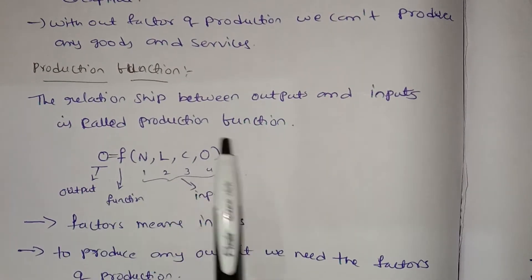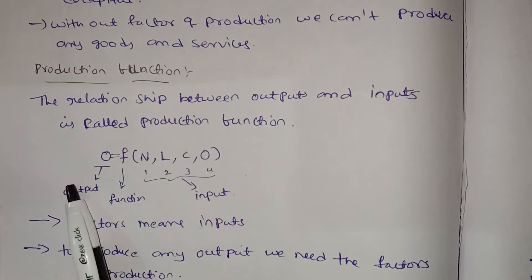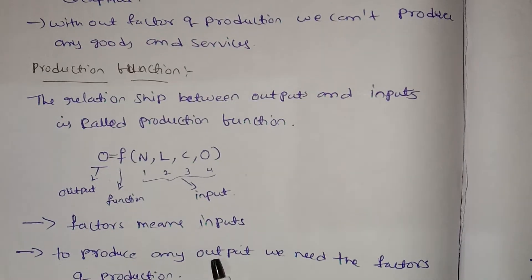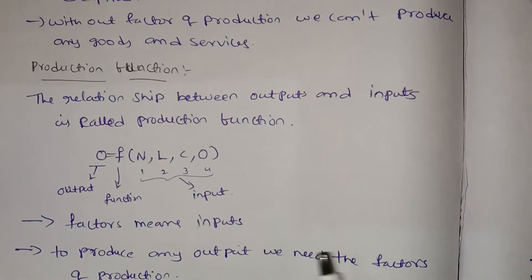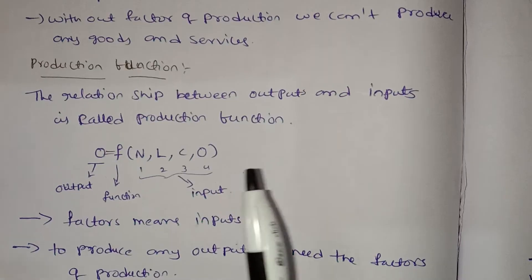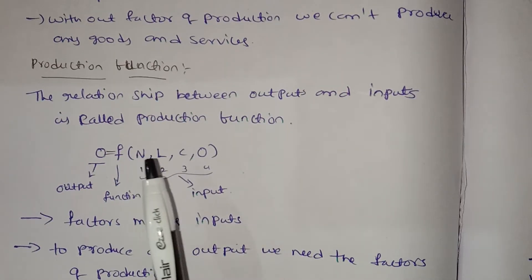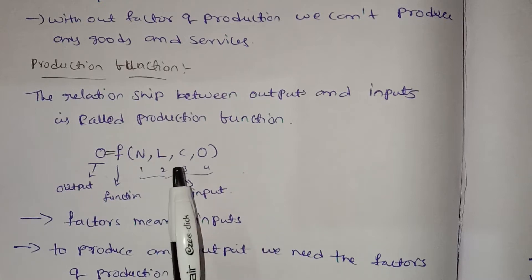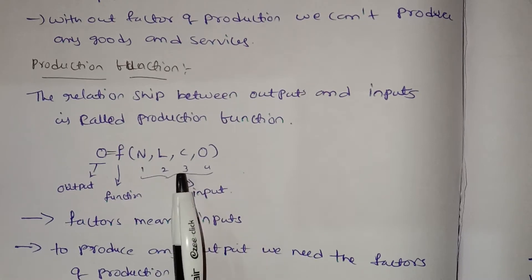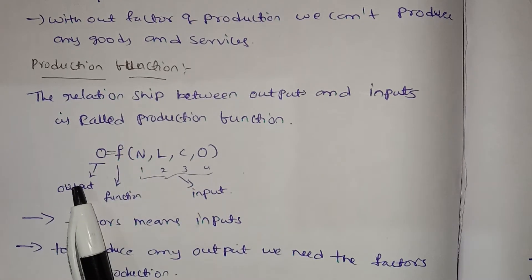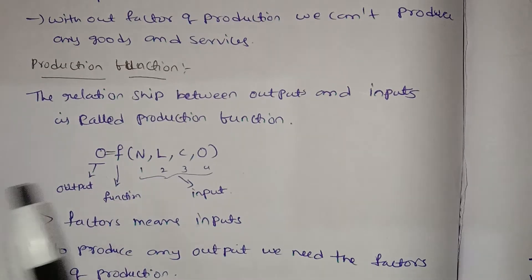Factors mean inputs. To produce any output, we need factors of production: land, labor, organization, and capital. Based on these inputs, we can see the output.